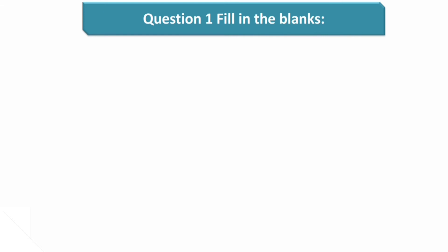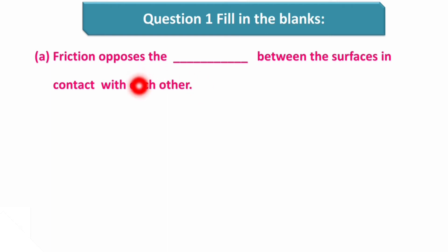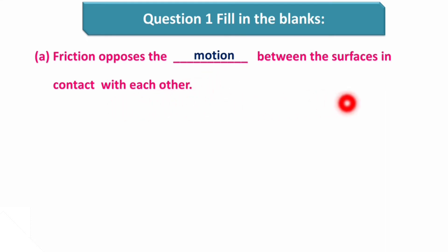Question number 1 is fill in the blanks. First one is: friction opposes the dash between the surfaces in contact with each other. Friction jo hai, wo kya oppose kerta hai? Do agar koi objects ek dusare ke contact mein hai, toh unka kya oppose kerta hai? It opposes motion. If one object is moving in this direction, then friction would be in the opposite direction. So, it generally opposes the motion.